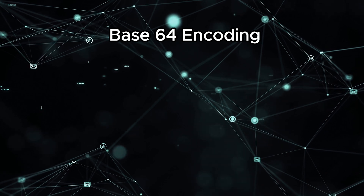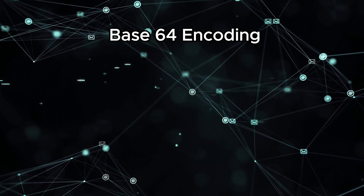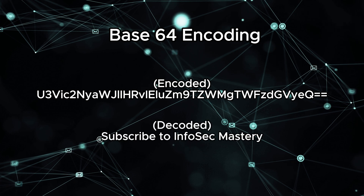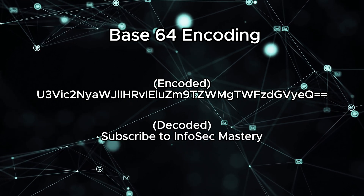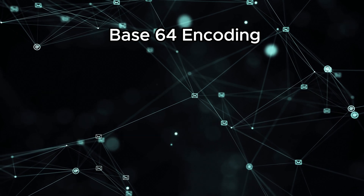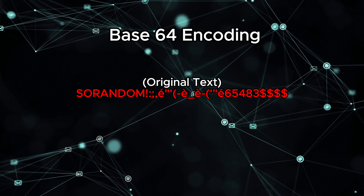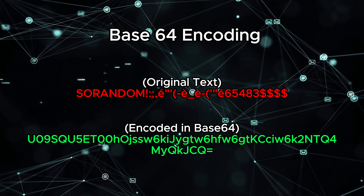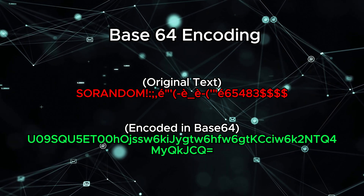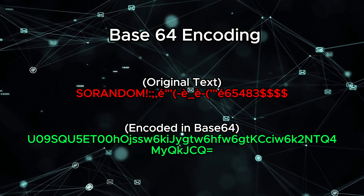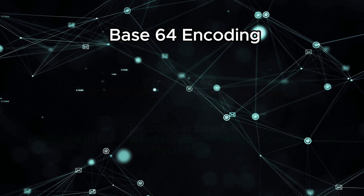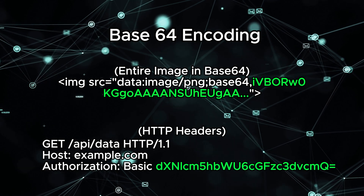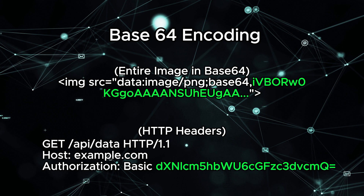Last but not least, we have the infamous Base64 encoding. It's a versatile encoding technique with various applications in web development. Keep in mind, Base64 encoding is not encryption — it transforms data into a format that is easily transferable. It transforms any weird symbols you throw at it into a combination of letters, numbers, plus symbols, slash symbols, and optionally some equal signs at the end. Imagine it as a language that web applications use to share information efficiently — from embedding images in HTML to storing complex data in cookies, Base64 encoding is the glue that binds different components of a web application.